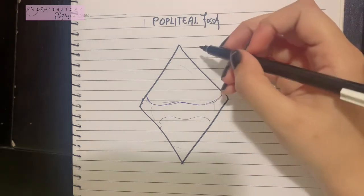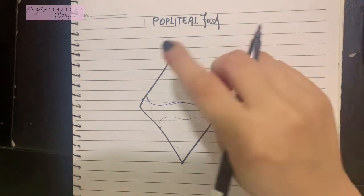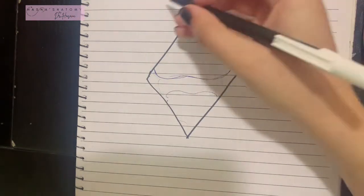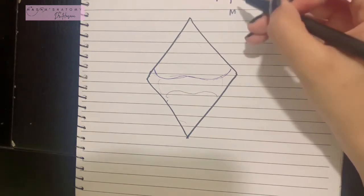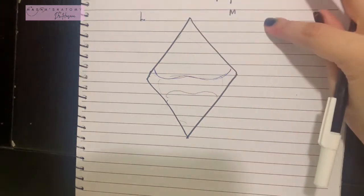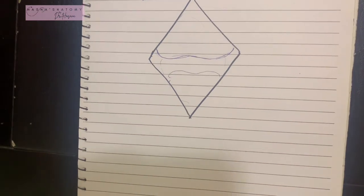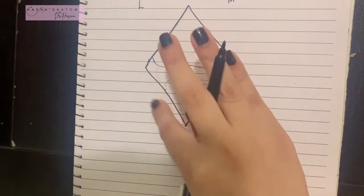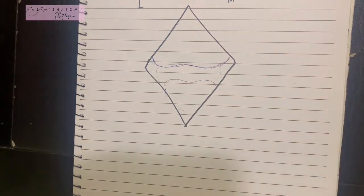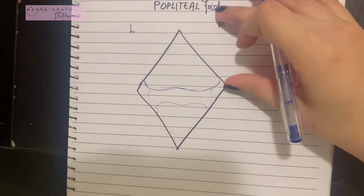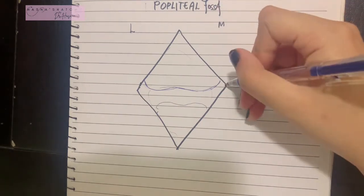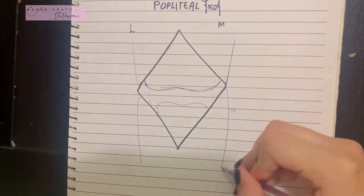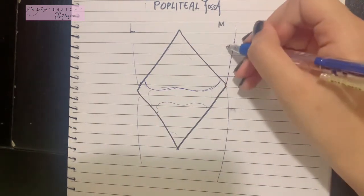The boundaries of the popliteal fossa are four in number, as it is a diamond-shaped structure. Let's say this is the medial side, this is the lateral side, this is superior, and this is inferior. Hence four boundaries are created: supralateral, supramedial, infralateral, and inframedial. The superior boundaries are formed by muscles of the thigh, while the inferior boundaries are formed by muscles of the leg.